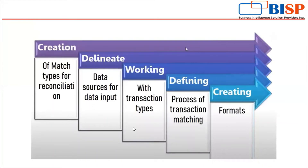What are the steps for transaction matching? The first step is the creation of match types, which are essentially data sources and rules combined. In the match type, we put the data sources and rules for the particular reconciliation. The second step is to define data sources, which can be more than two — for example, in intercompany transactions, there are two sources: intercompany receivable and intercompany payable. After defining data sources, the next step is to work with transaction types.